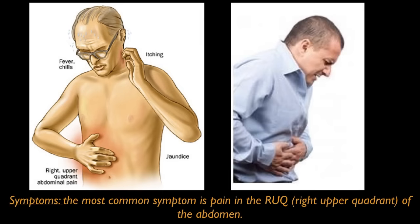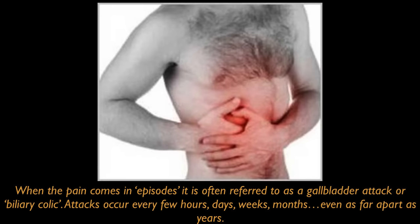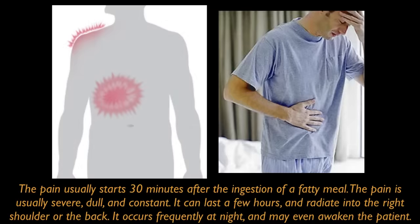Symptoms of gallstones: the most common symptom is pain in the right upper part of the abdomen. When the pain comes in episodes, it is often referred to as a gallbladder attack or biliary colic. Attacks can occur every few hours, days, weeks, months, or even years apart. The pain usually starts about 30 minutes after ingestion of a fatty meal. The pain is usually severe, dull, and constant. It can last a few hours and radiate into the right shoulder or even the back. It occurs frequently at night and may even awaken the patient from sleep.